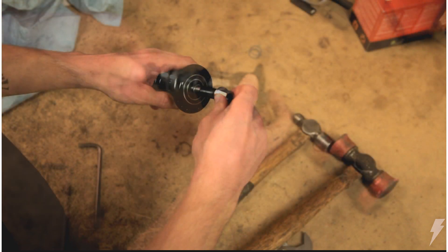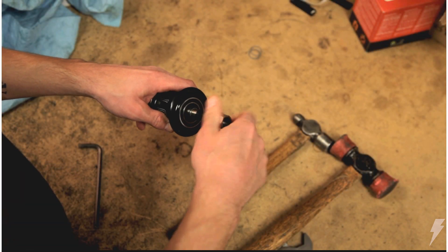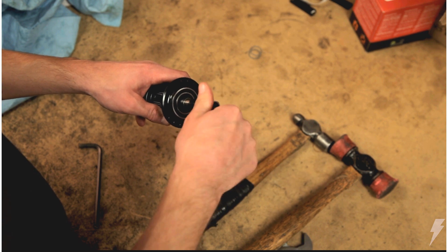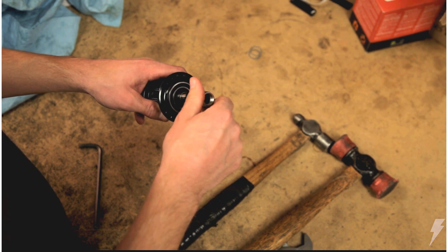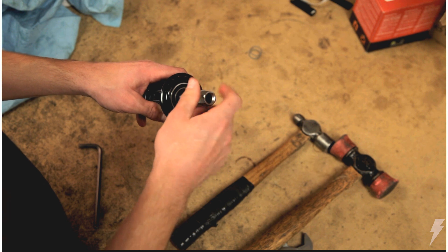If you don't have a rubber mallet, you can use a regular ball-peen hammer and an old axle nut to remove the axle without damaging the threads. Thread the nut on the axle three-quarters of the way down, then hit the axle out.